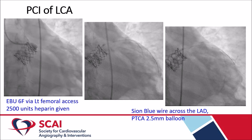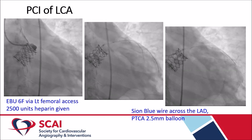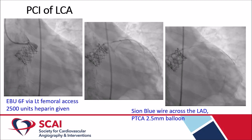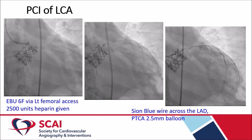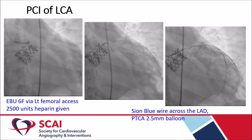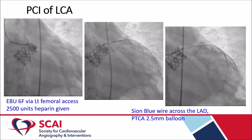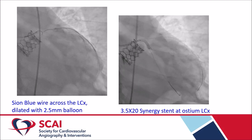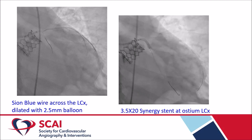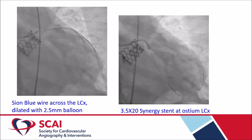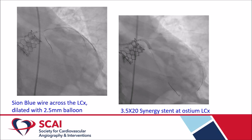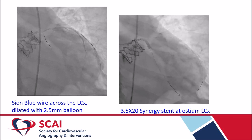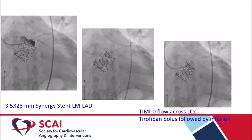A 6F guide from the left femoral approach was used. Additional heparin 2500 units was given. A Sion Blue wire was used to cross the left LAD, which was dilated with a 2.5 mm balloon. The LCX was also rewired with difficulty.